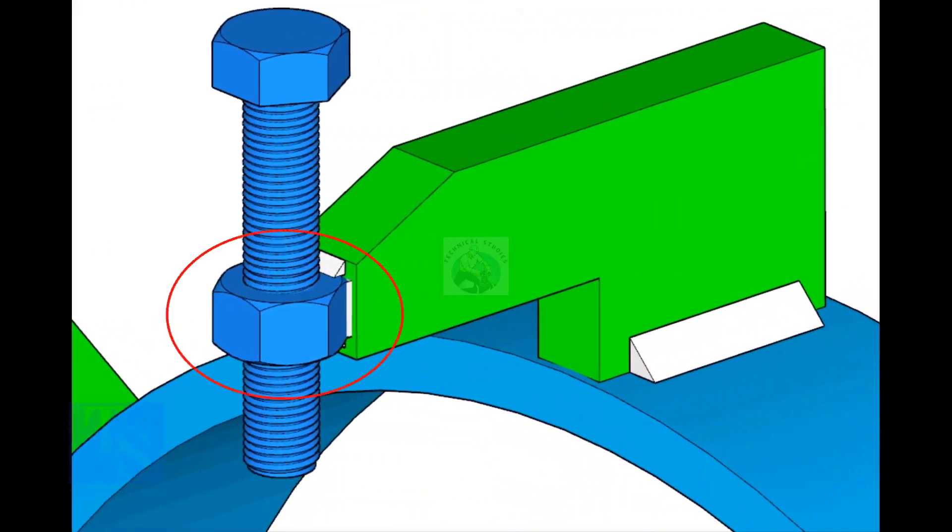The nut shall be welded with the L-clamp from all around. This welding shall be a minimum of five millimeters on both sides.